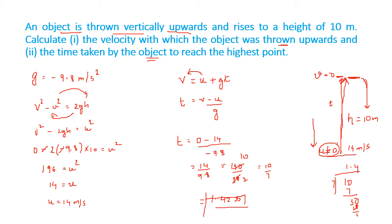When a body is dropped from a building or thrown upward, we keep it simple. Previously we saw a car going on a horizontal road; here we changed it to vertical. Whenever a body is falling towards the ground or going away from the ground there is always Earth's gravitational force acting on it. When falling downward with the acceleration, we take G positive; when going upward against the acceleration, we take G negative.